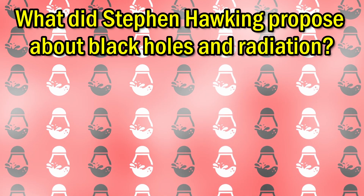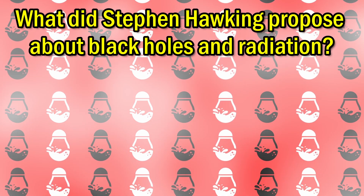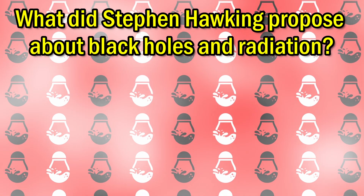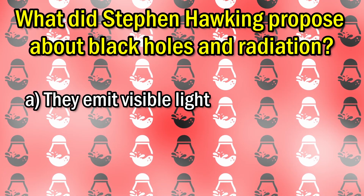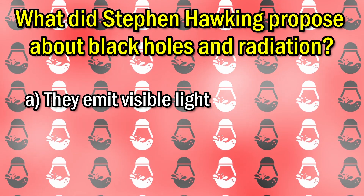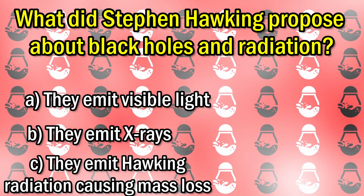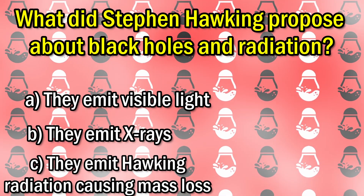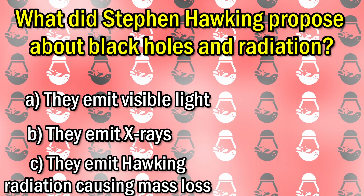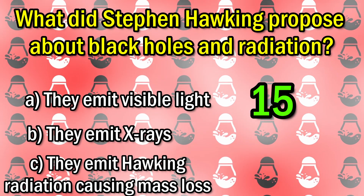Next question. What did Stephen Hawking propose about black holes and radiation? A: they emit visible light. B: they emit X-rays. C: they emit Hawking radiation, causing mass loss.